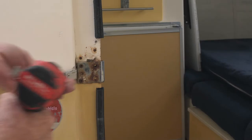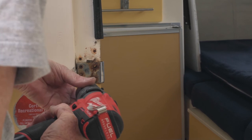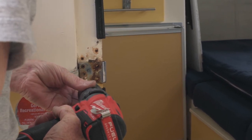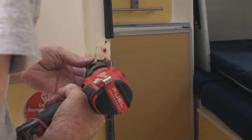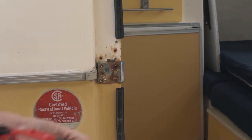If the latch bolts do not engage the original striker plate, then remove that plate by drilling out the pop rivets. Then use a screwdriver or small pry bar to remove the latch plate.